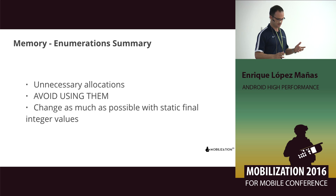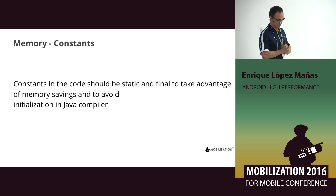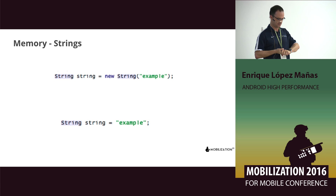In general, enumerations are unnecessary — they create unnecessary allocations. We should avoid using them and use as much as possible static final integer values with the @IntDef annotation. The same happens a little bit with constants — a constant is a static final variable at the end, and they generally help us save a lot of memory.